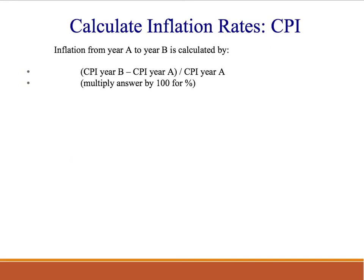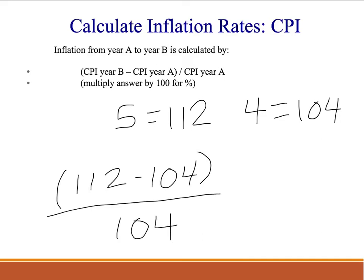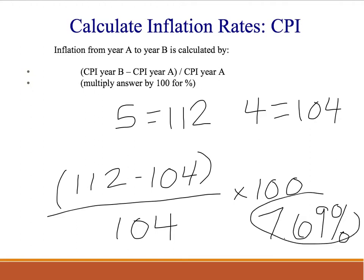For instance, using the CPI — the consumer price index — you take the CPI for year B minus the CPI for year A, divided by the CPI for year A, multiplied by 100, and you get a percentage change. For example, if the CPI in year 5 is 112 and the CPI in year 4 is 104, you do 112 minus 104, divided by 104, multiplied by 100, and you get 7.69%. That would be your inflation rate: 7.69%.